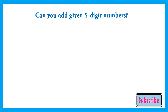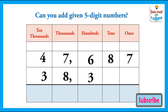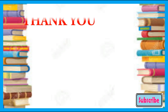Can you add the given five-digit numbers? One question is given for you — you have to add forty-seven thousand six hundred and eighty-seven and thirty-eight thousand three hundred and fifty-four. Good luck, and thank you!